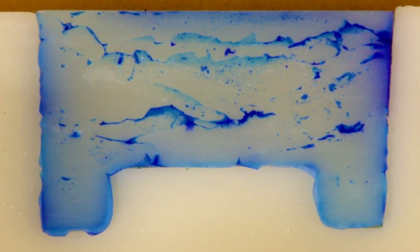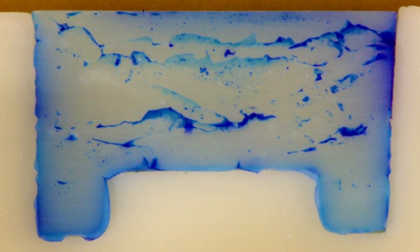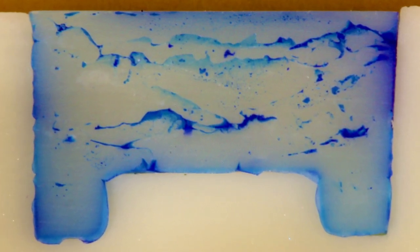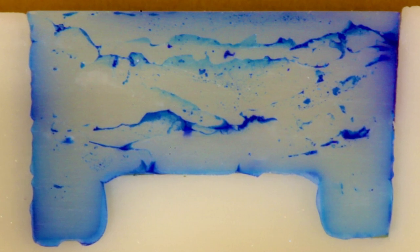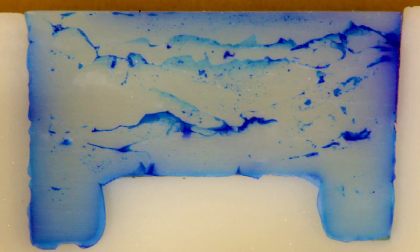Now we never knew that these knit lines were present until we started doing Micro CT or until we used this mold which allowed us to look down the side of the restoration and also at the bottom of the restoration.